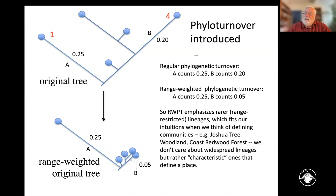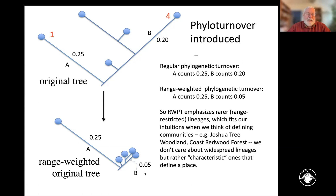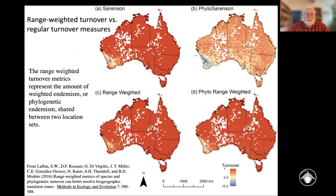The phylogenetic range-weighted turnover emphasizes narrowly distributed lineages, which turns out to be a much better measure for looking for biotic breaks and defining communities or biomes. Our intuitions, when we talk about what's Joshua Tree Woodland or Coast Redwood Forest, we're looking not for taxa that are all over the state — that doesn't help define a particular region. We're looking for taxa with limited ranges. This range-weighted phylogenetic turnover turns out to be an even better measure than regular phylogenetic turnover, and both are better than species turnover.